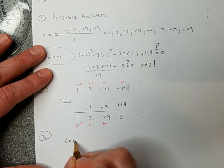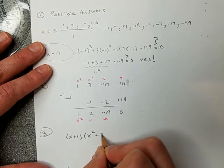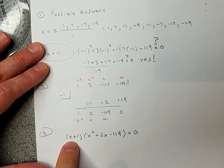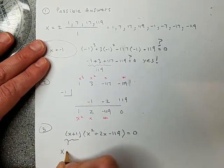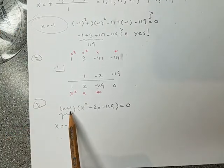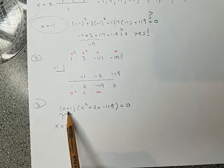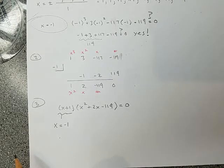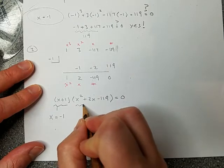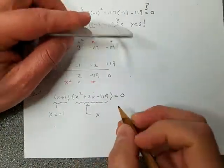This synthetic division gives us a way to factor the original equation. The result is 1x² + 2x − 119. So the original factors as (x + 1)(x² + 2x − 119). The factor (x + 1) comes from negative 1 being an answer — if you let x equal negative 1, then negative 1 plus 1 is zero. That's why the sign in the factor is opposite to the value of the solution.